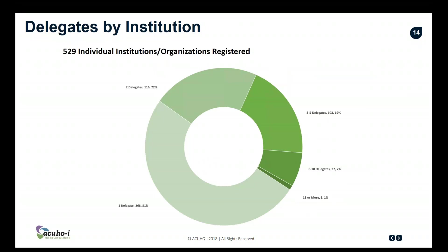This next slide shows the delegates by institution — how many delegates attend from each institution. You can see that 51% of the folks who attend are the only delegate from their institution attending the conference. I think it's really fascinating, because at some institutions many more attend. Two delegates is about 22%, three to five delegates is at 19%, six to ten is at 7%, and 11 delegates or more is 1%. Over half of attendees are the only person from their institution, so being able to connect with colleagues back on their own campuses is a really important part of presentations.